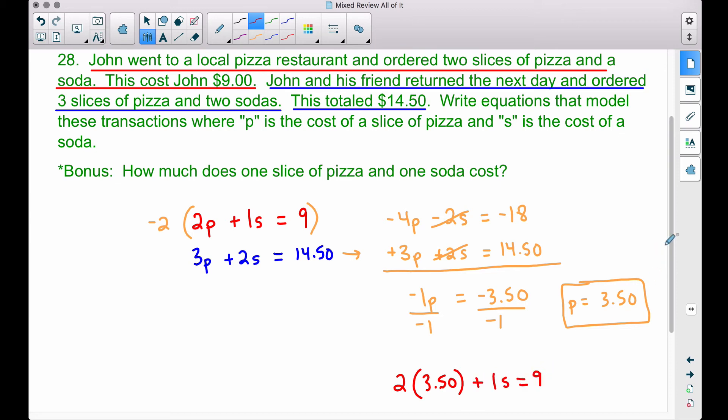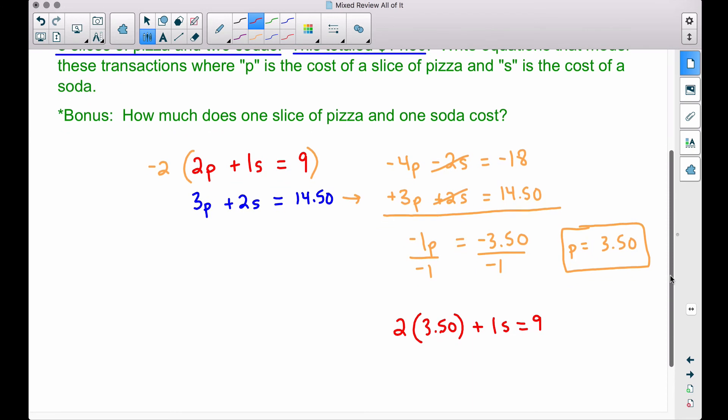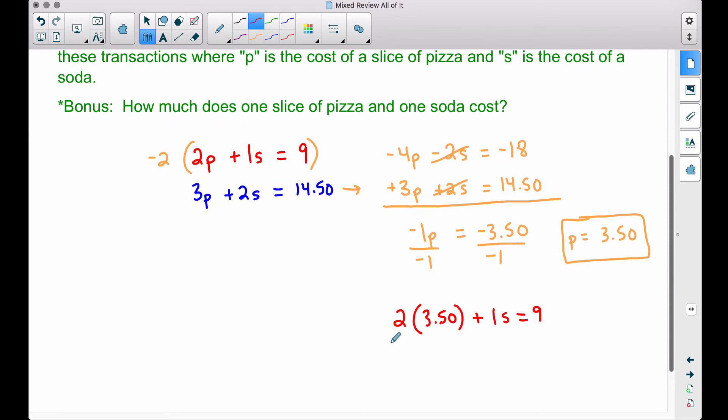Now what you're probably thinking is, oh we don't have to do an equation here, and you're right, you don't have to. If you think about how this works, two slices of pizza at three dollars and fifty cents per pizza, that's going to be seven bucks. Two times three fifty is seven plus a soda. I'm just going to write down an S here because one S is the same thing as S. This is equal to nine dollars.